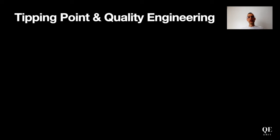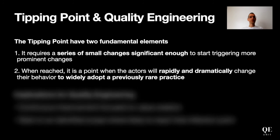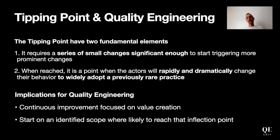Looking at the link between tipping point and quality engineering, we first need to understand its two key elements. First, it requires a series of cumulative small changes that bring value to the ecosystem — this is a very fundamental point. Second, once we reach that point, the ecosystem will rapidly and dramatically adopt these new practices. This is what we're trying to achieve with quality engineering: replacing old practices with quality engineering ones. Continuous improvement is key.